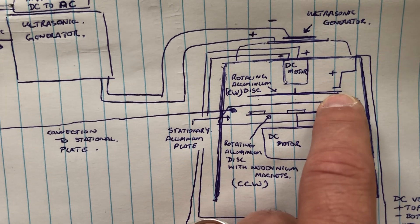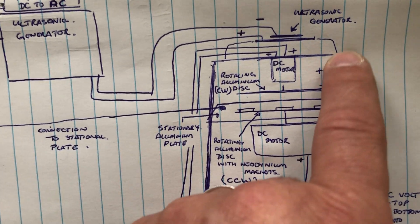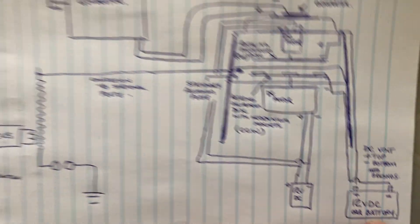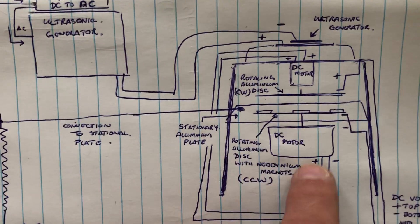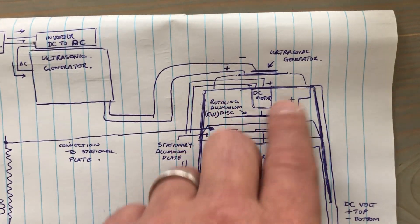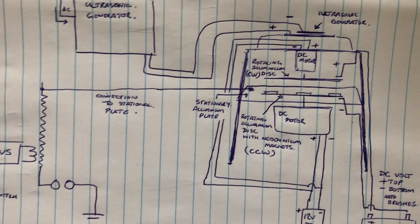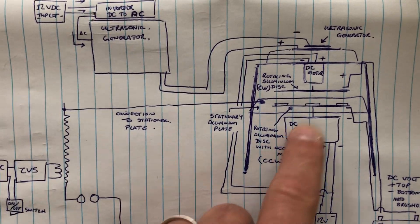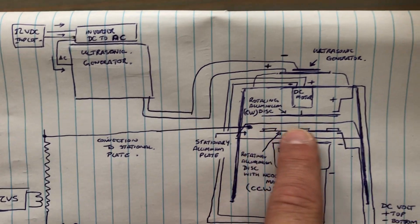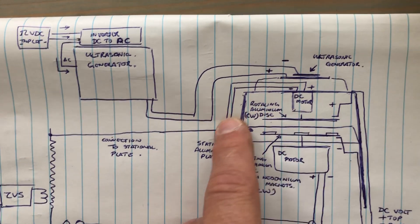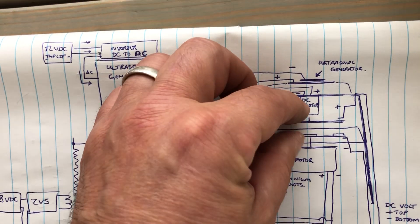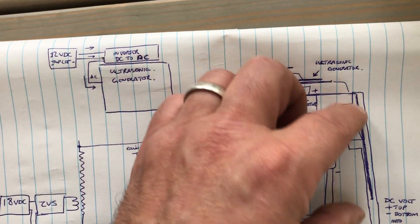So basically the same setup as before. We have two brushes, one off the top disc, rotating disc, going down to a car battery. And a brush off the bottom going down to a car battery. Which maybe that's stimulating the magnetic field. And then when we add a spark to it, it maybe forms some kind of bubble.